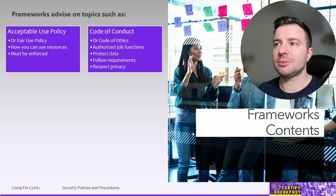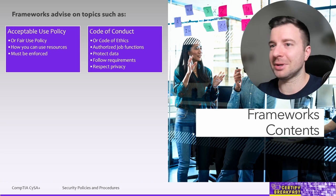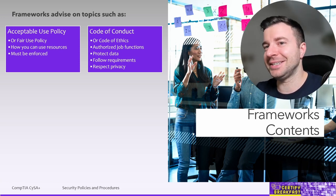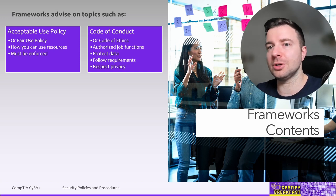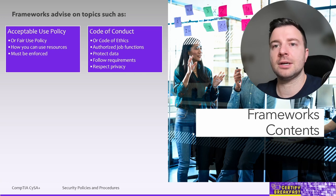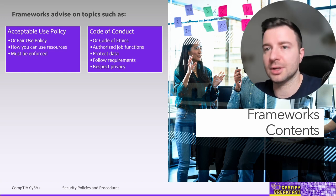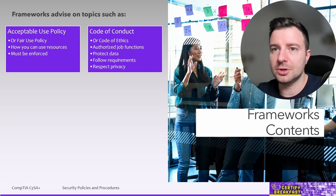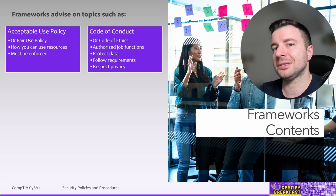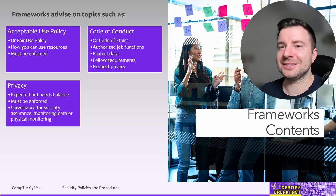Another policy is the Code of Conduct, also known as the Code of Ethics — somewhat related to the AUP. It's basically the 'with great power comes great responsibility' clause. The Code of Conduct sets the expectation to behave ethically even when you're a privileged user. It should include conditions such as: only perform authorized job functions; protect the confidentiality and integrity of data you manage; secure account credentials and don't share them; be aware of compliance requirements and don't shortcut them; and respect the privacy of others even when you have access to their personal profiles, email data, and browsing history.